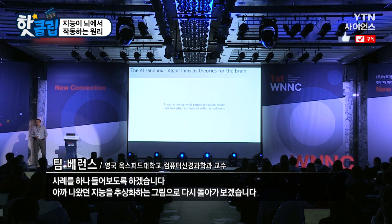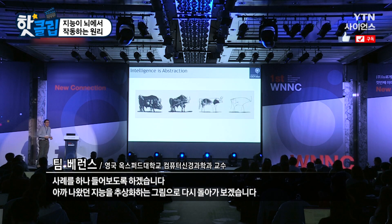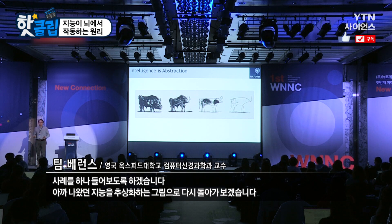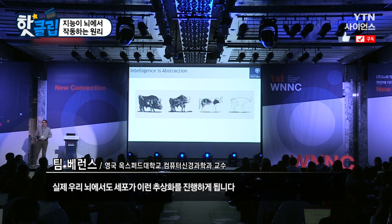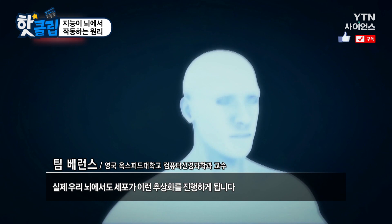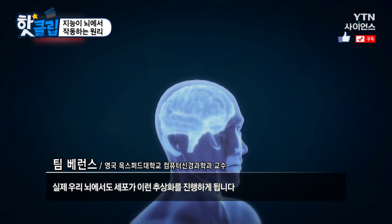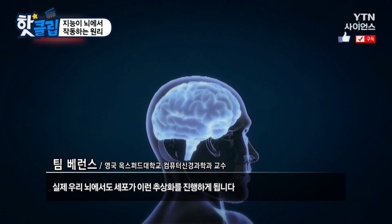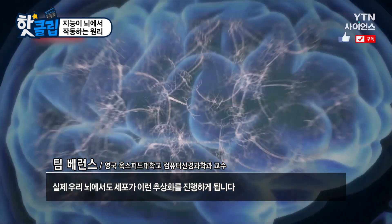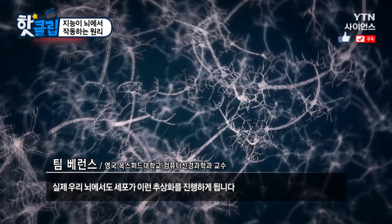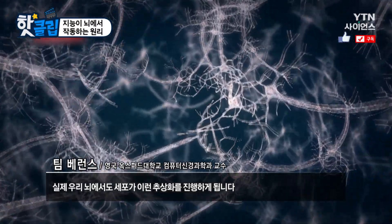Let me give you one example of this. I'm going to take you back to this idea of intelligence as abstraction, and I'm going to show you an example where that's true in your own brain — where there are cells that are really showing this abstraction.